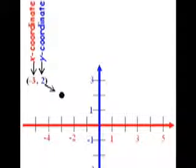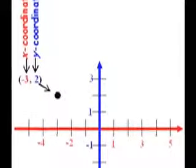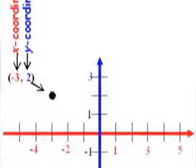Chad learned that an ordered pair was a function's input value paired with its output value. Chad also learned that to graph a function, he needed to plot all the ordered pairs and then connect them.